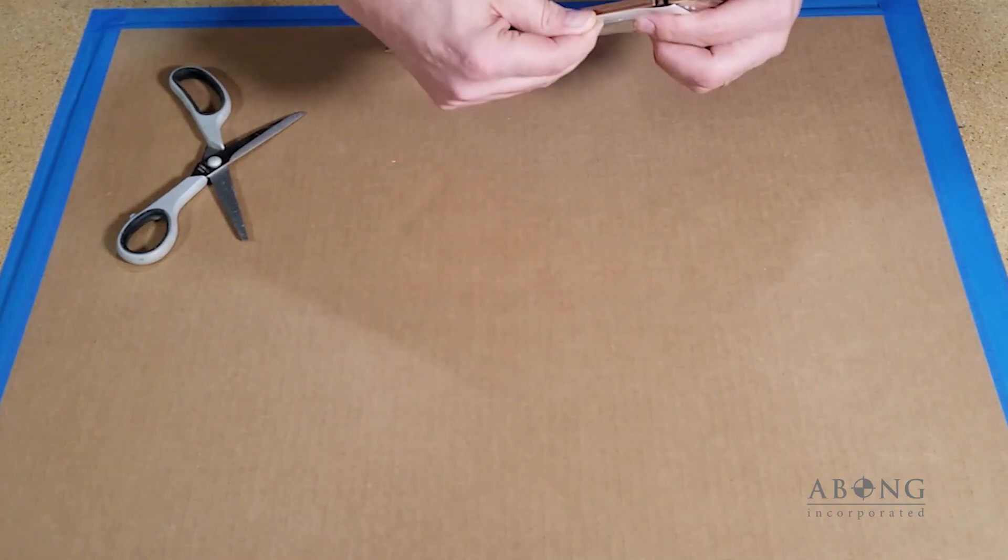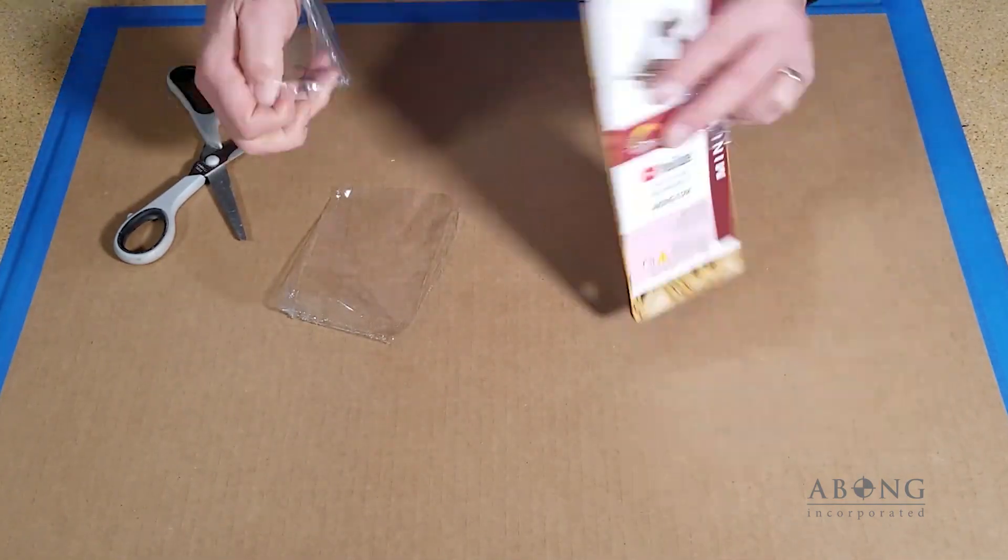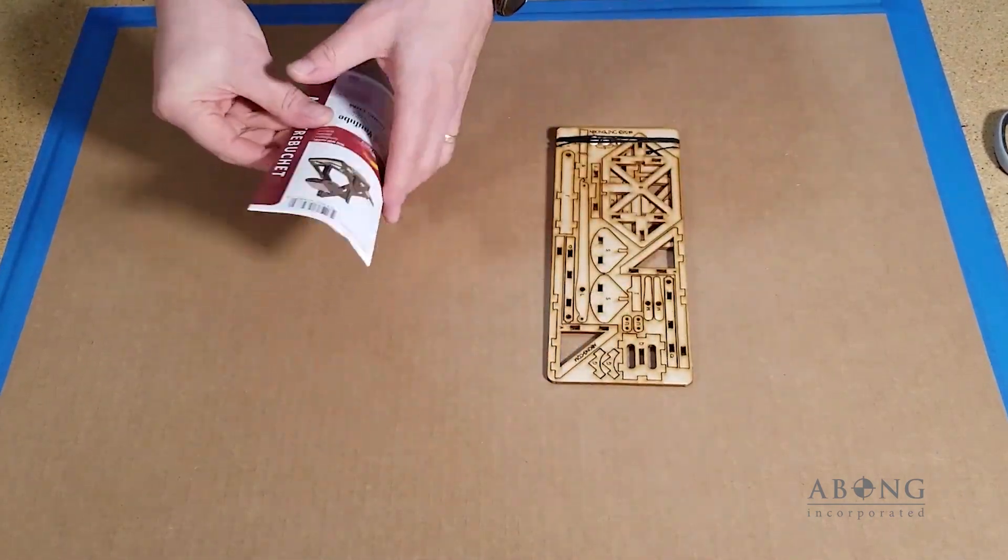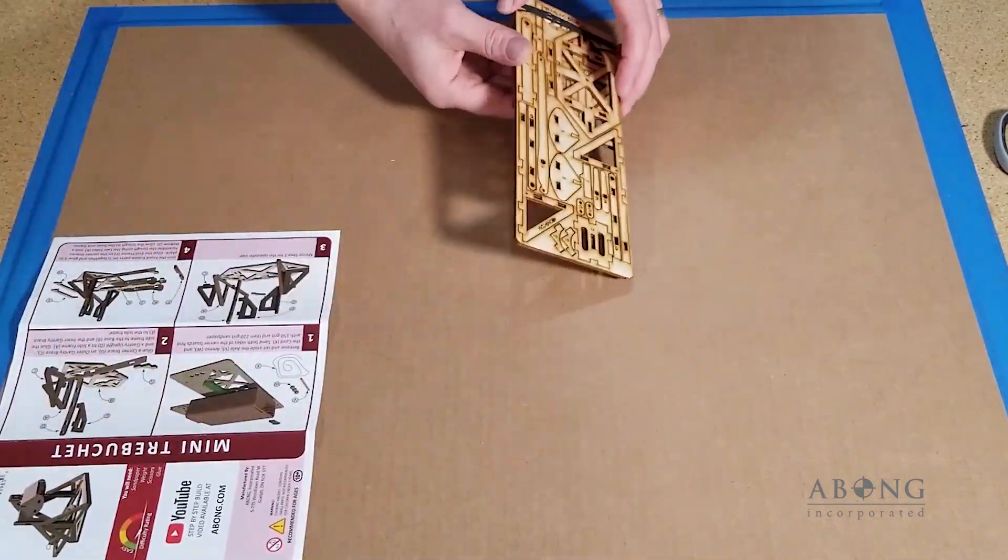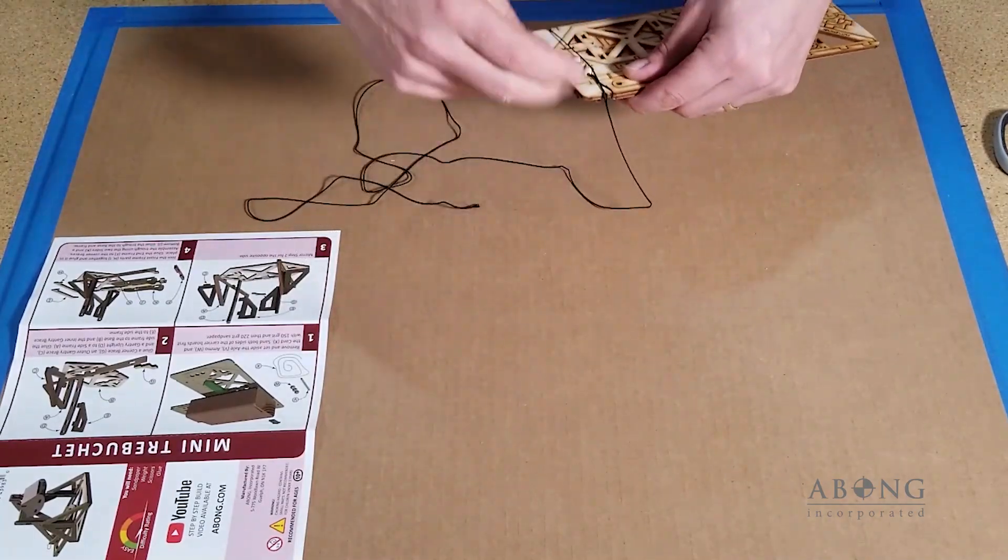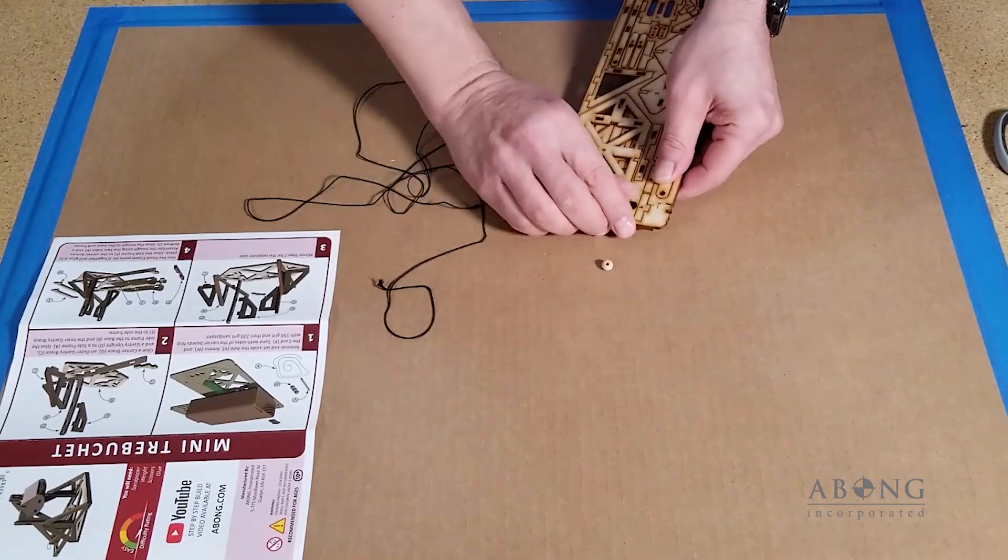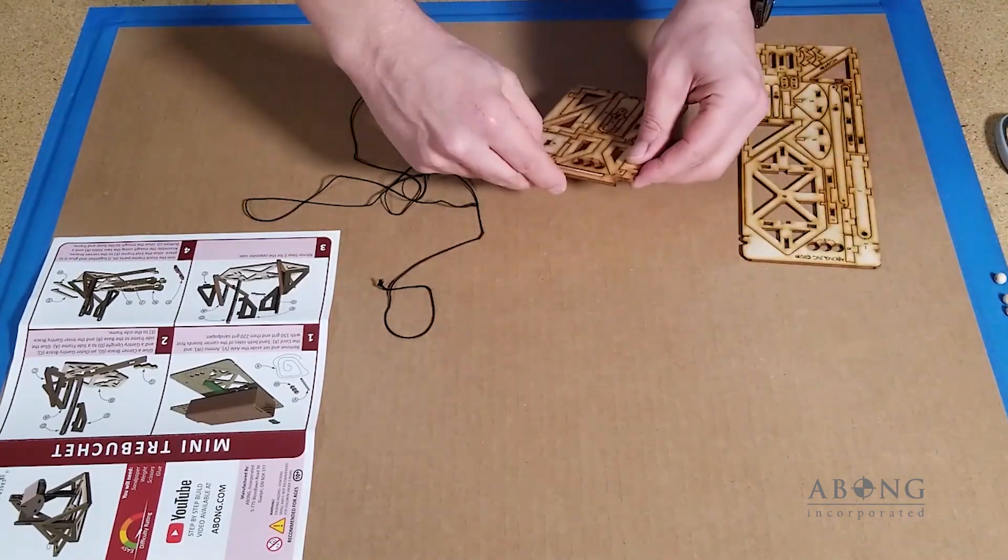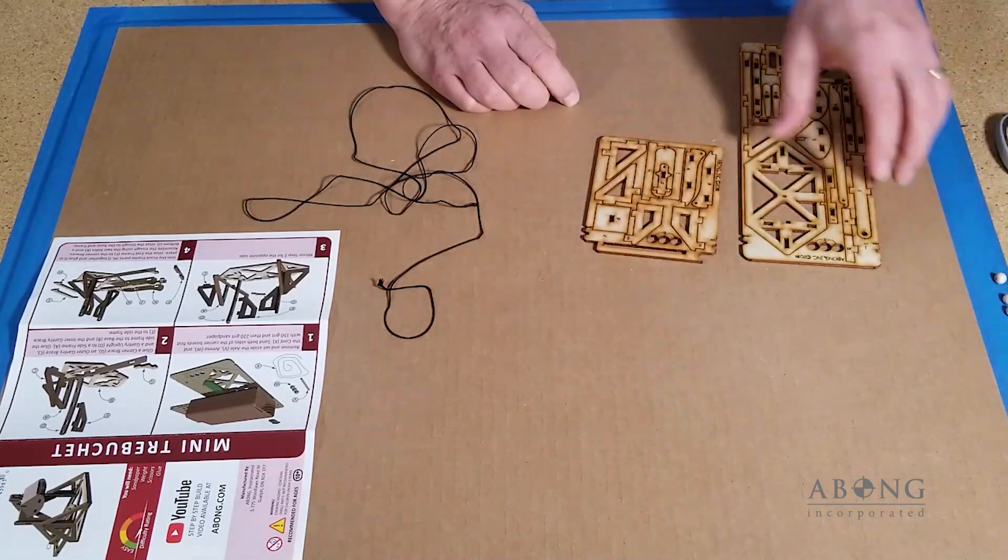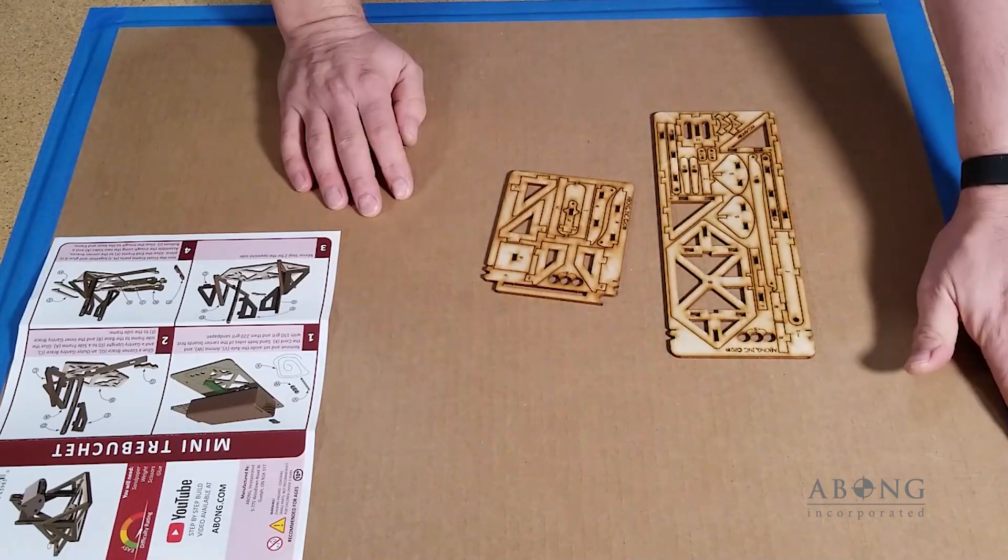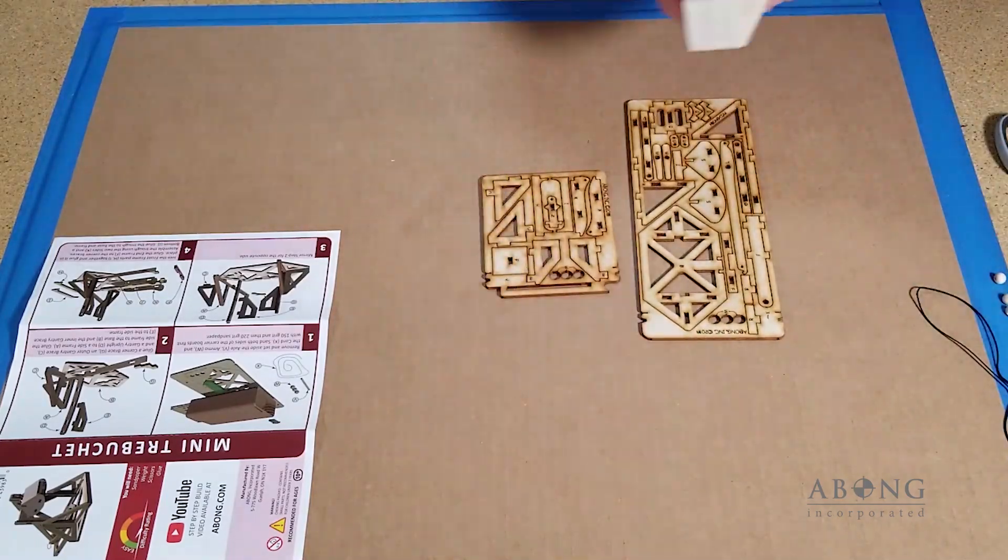You can just get rid of the plastic wrapper. And you're going to set aside the instructions and then remove the cord, the ammo and the axle from the carrier board. So there's the three pieces of ammo and the axle is embedded there as well. We'll just set aside the piece of cord. So now we have the two boards and we can start sanding.